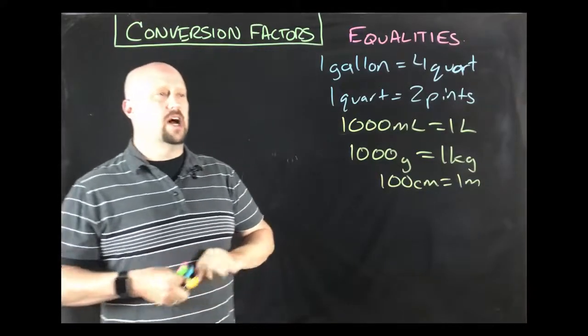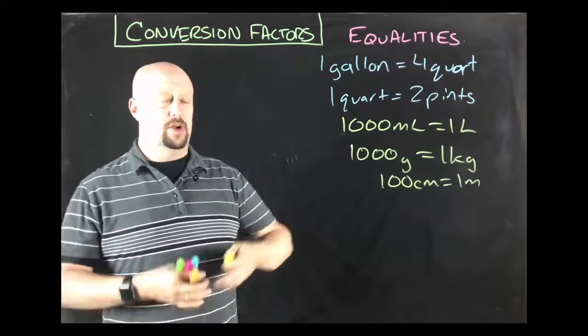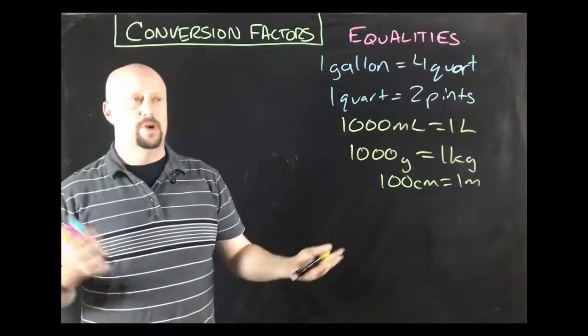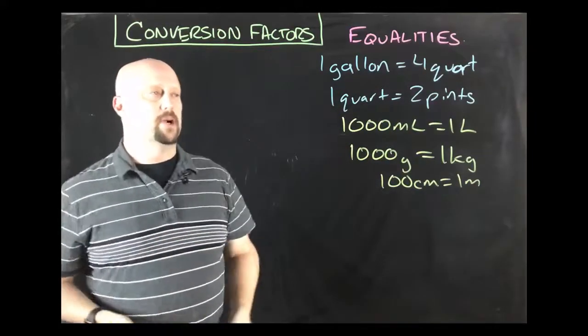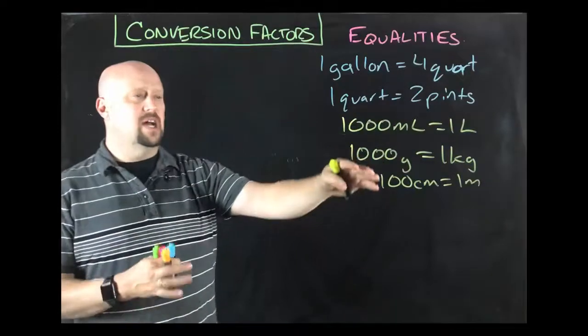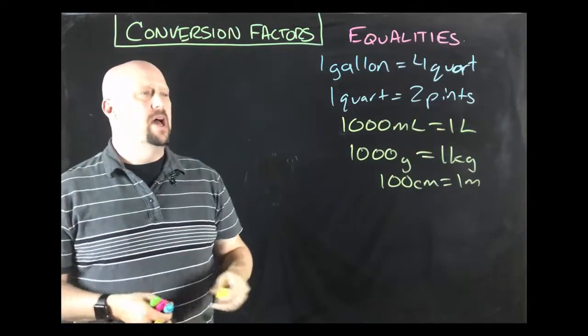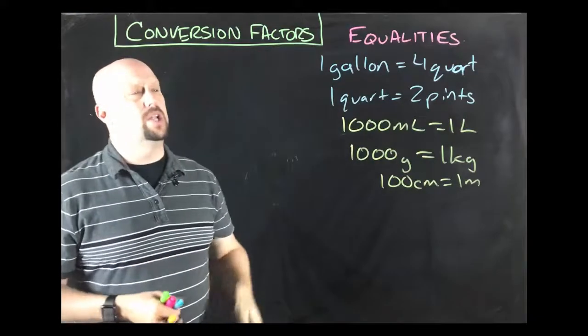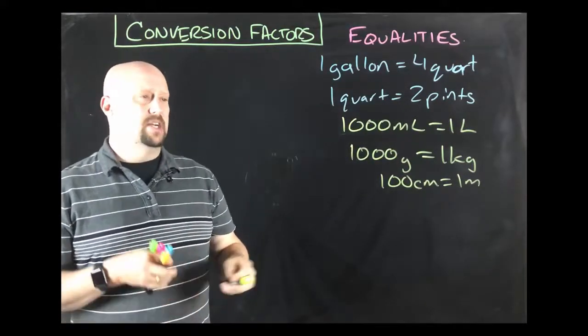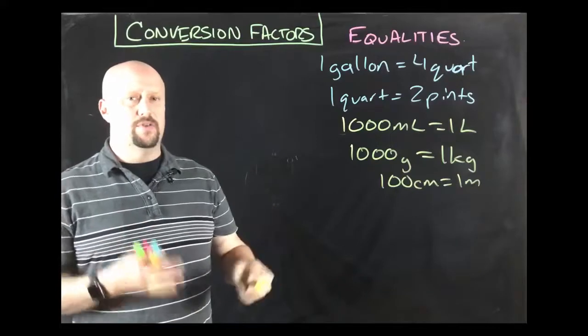Okay. So there's all kinds of different equalities and they're really, they're just almost an infinite number of situations where we can set up an equality. An equality itself is the beginning. This is what we should write down before we start to do any chemistry math, because what every single equality allows us to do is it allows us to get what we call conversion factors.